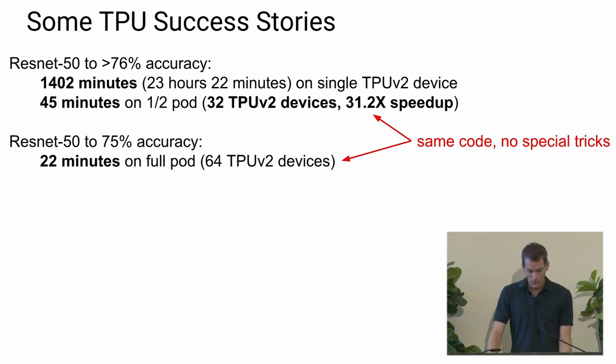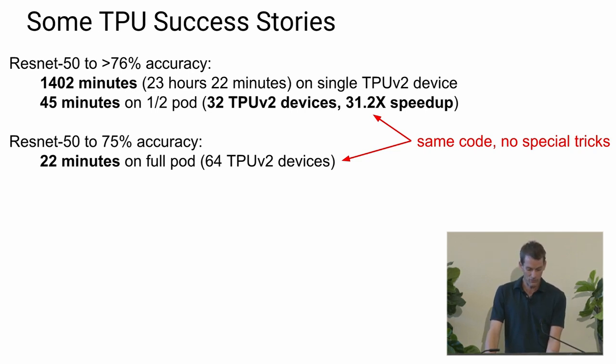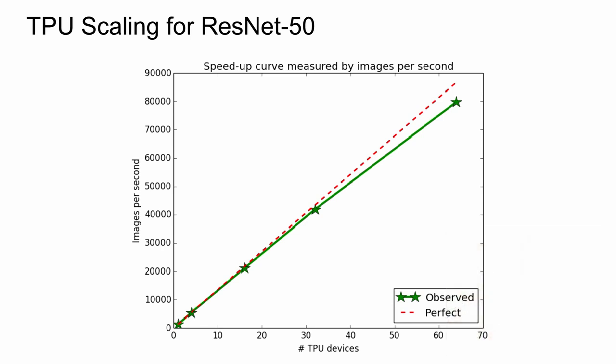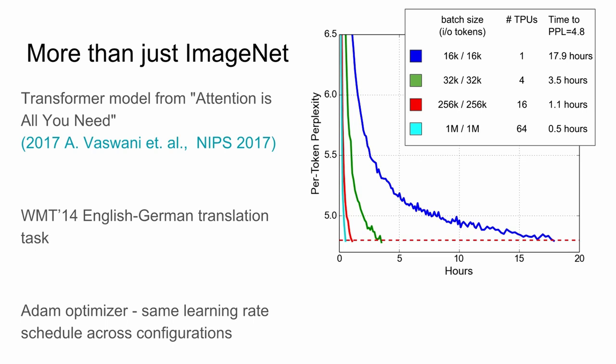We can train ResNet on Cloud TPUs to 76% accuracy in just under a day on one device, scaling to 45 minutes on a half pod. We get pretty close to linear scaling on these pods—the images-per-second speed-up curve is very good from one to two, four, 16, to 64 devices. We also have a Transformer model from our group—the 'Attention Is All You Need' paper—that allows very parallel computation for natural language and speech applications.